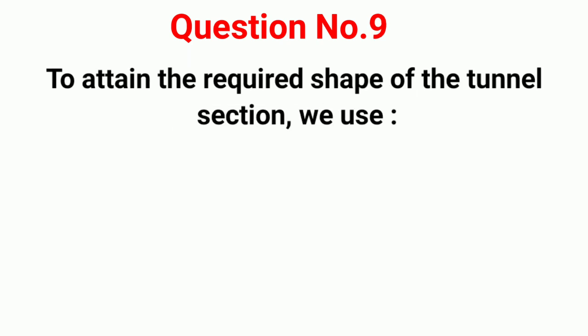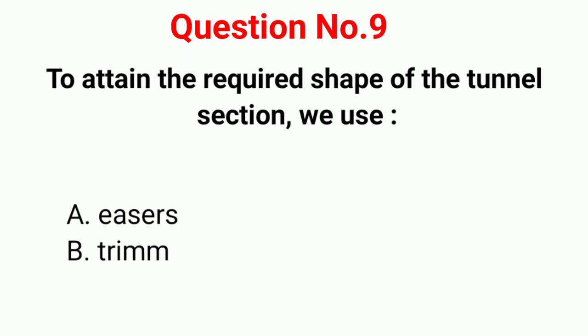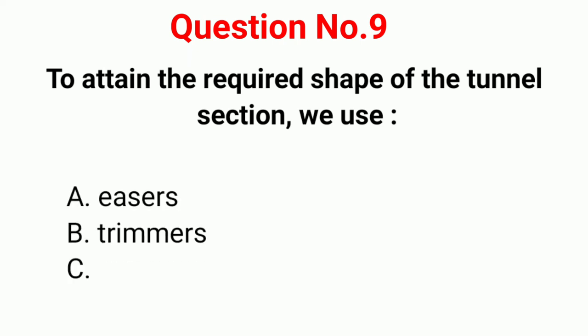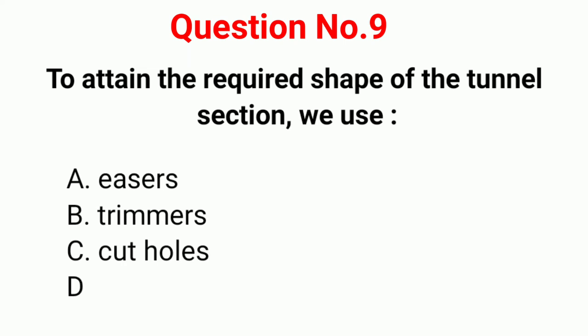Question number 9. To attain the required shape of tunnel section, we use: Option A: Easers. Option B: Trimmers. Option C: Cut holes. Option D: T-cell.